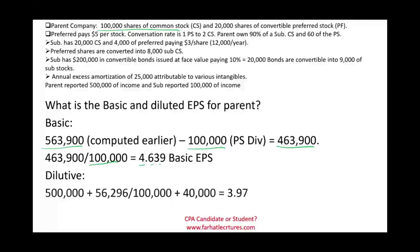Now we compute the parent's diluted EPS. The numerator uses $500,000 plus $56,296 (which is 62% × $90,800), divided by 100,000 original shares plus 40,000 shares from converting the parent's own 20,000 convertible preferred at 2-to-1. This gives a diluted EPS of approximately $3.97, which is less than $4.639 — confirming it is indeed dilutive.